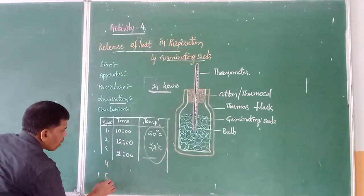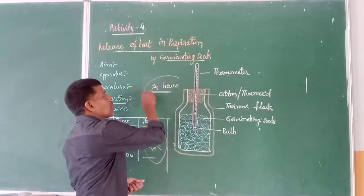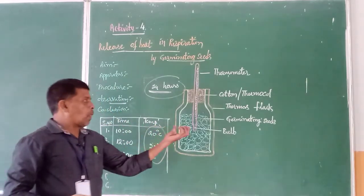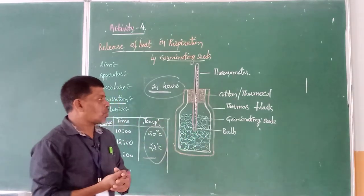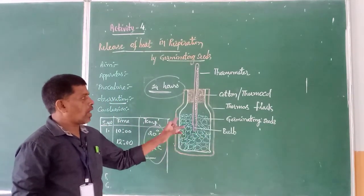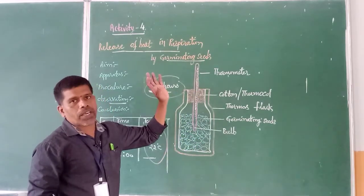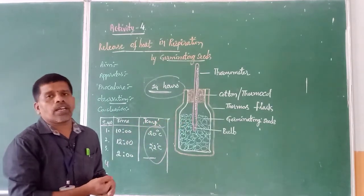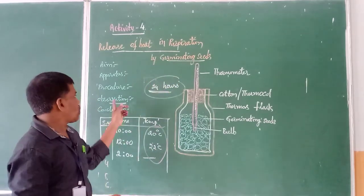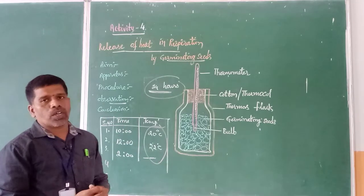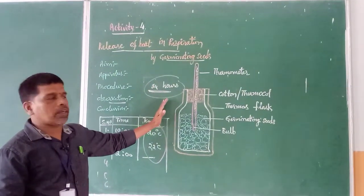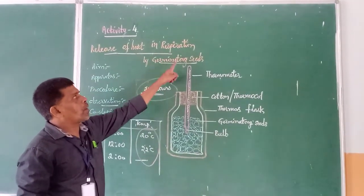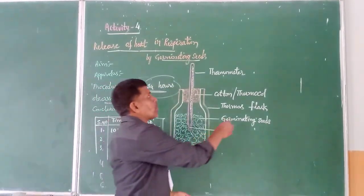Take about 5 to 6 readings within 24 hours. You will see a gradual increase in temperature. Whenever respiration is performed by the germinating seeds, release of heat takes place, and that heat release is recorded with the help of the thermometer. Using this table we can say that heat is released by the germinating seeds during respiration. That is the observation. And finally the conclusion: from the above experiment we can conclude that heat is produced during respiration by the germinating seeds.